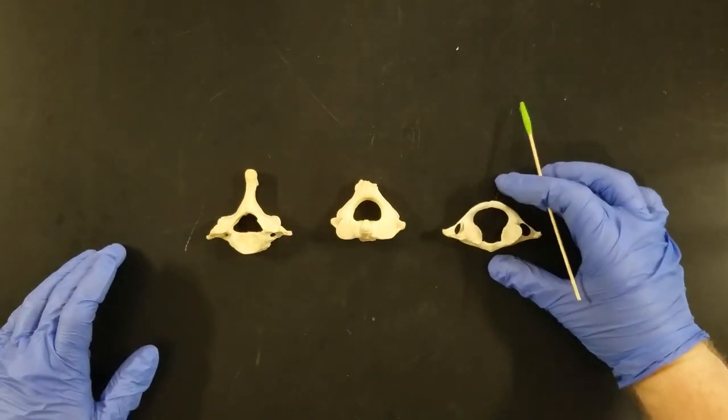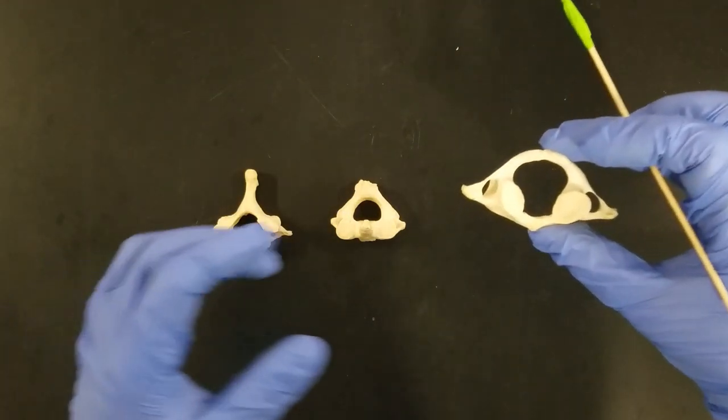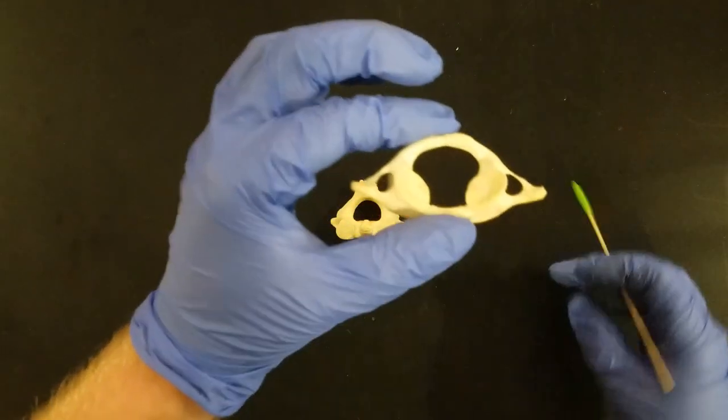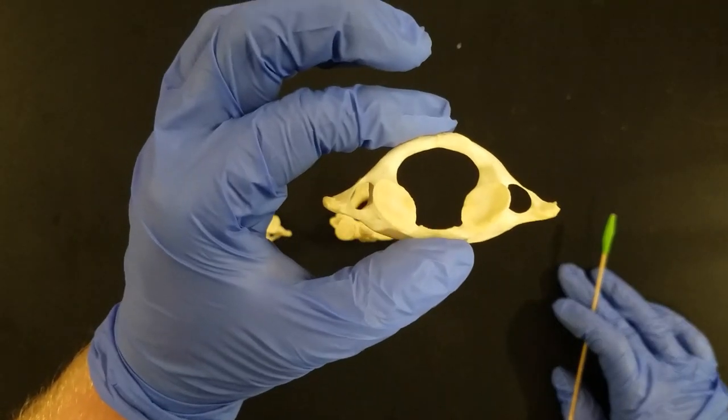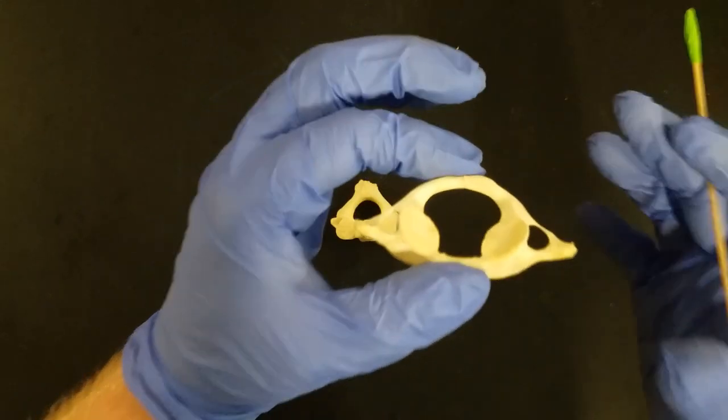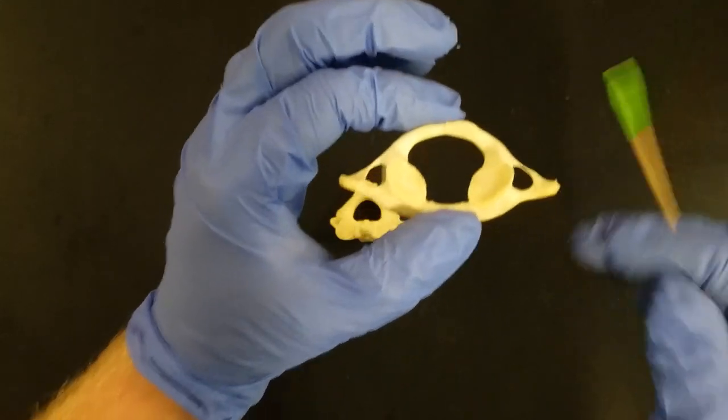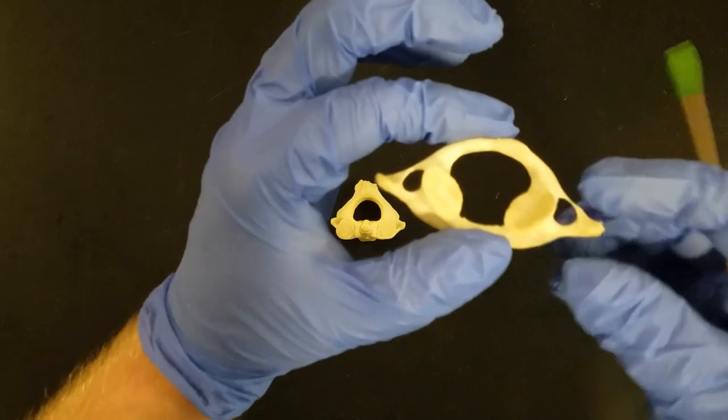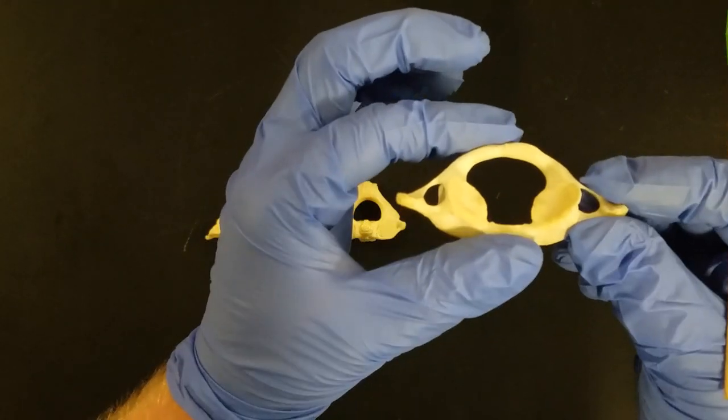Let's start with C1, our first cervical vertebrae. C1 is also called Atlas. If you know your mythology, Atlas was the god that held the world on his shoulders. So the Atlas vertebrae is the vertebrae that holds the skull on its shoulders.